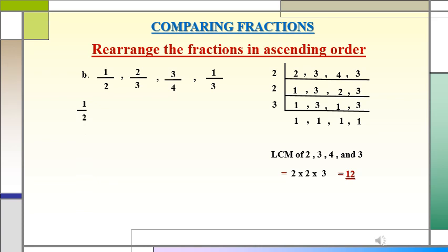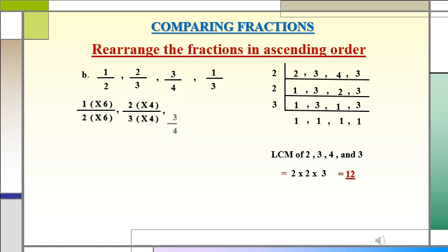The first fraction is 1/2. 2 multiplied by 6 gives me 12, so we will multiply the numerator and the denominator by 6 to get an equivalent fraction with denominator 12. Similarly, for 2/3: 3 multiplied by 4 is equal to 12, so multiply the numerator and the denominator by 4. For 3/4: 4 multiplied by 3 gives me 12, so multiply the numerator and denominator by 3. Finally, for 1/3: 3 multiplied by 4 is equal to 12, so multiply the numerator and the denominator by 4.